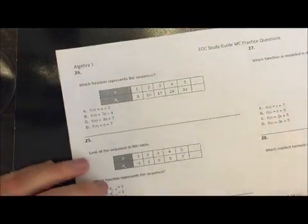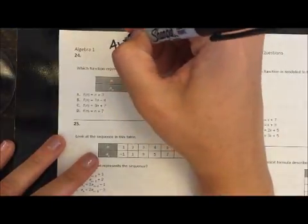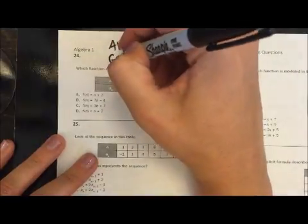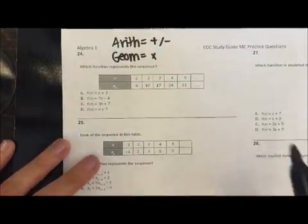Alright, so we're going to look through some sequence problems, number 24 through 29. Let's remember that arithmetic sequences are when you add or subtract, and geometric sequences are when you multiply. Okay, so let's look at this first question.